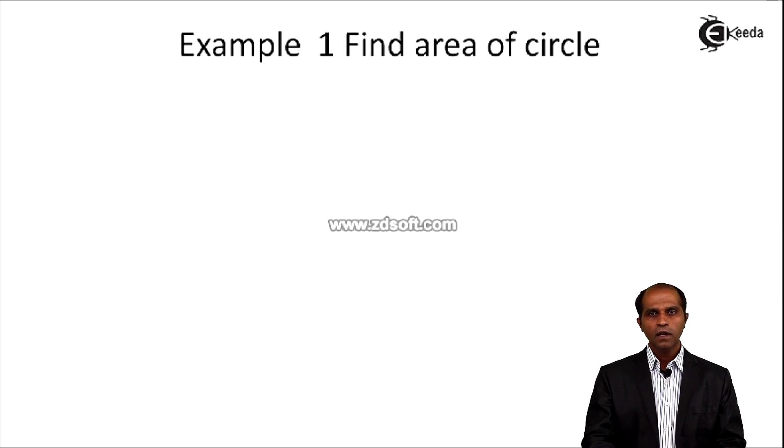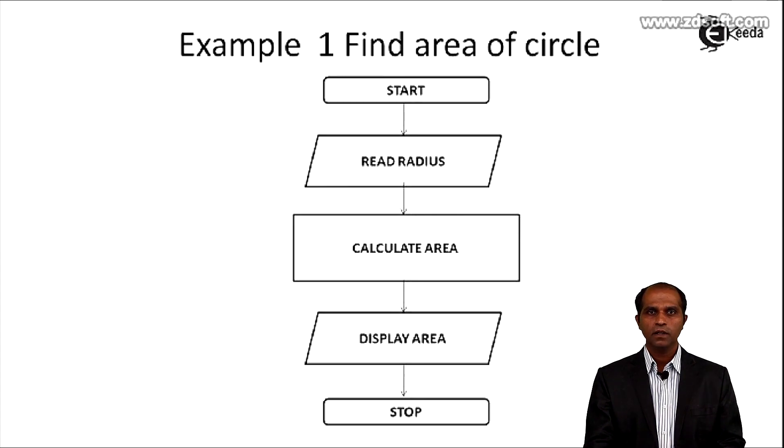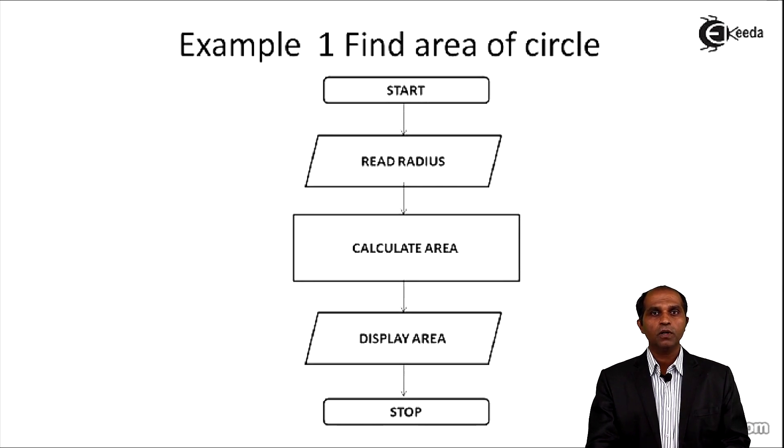Let's see the entire flowchart. The flowchart says that the rounded edges rectangle will have start. Then you are supposed to have the read radius. Now the parallelograms has been used to display the message and even display the output also. So it all depends upon what you write in this parallelogram to decide whether it will act as an input or output instruction.